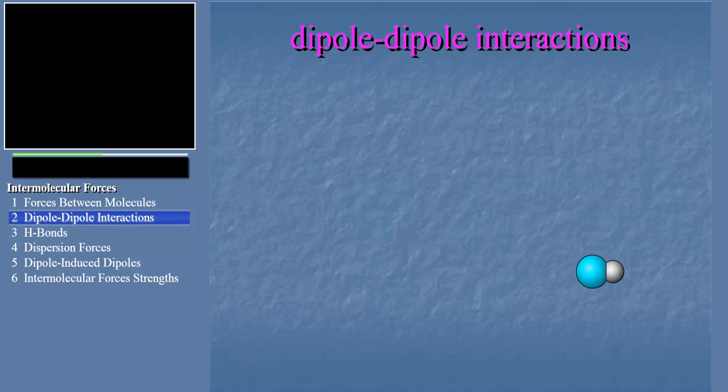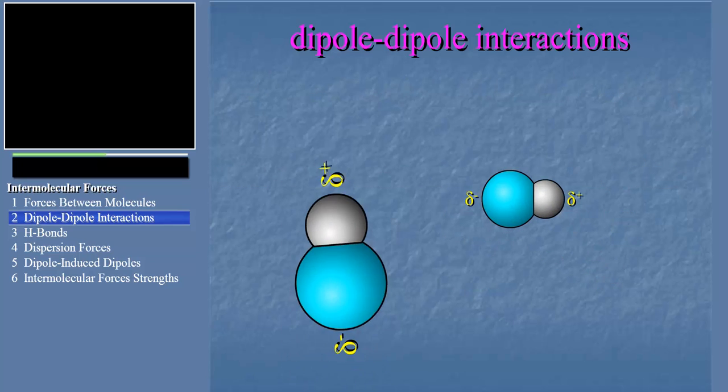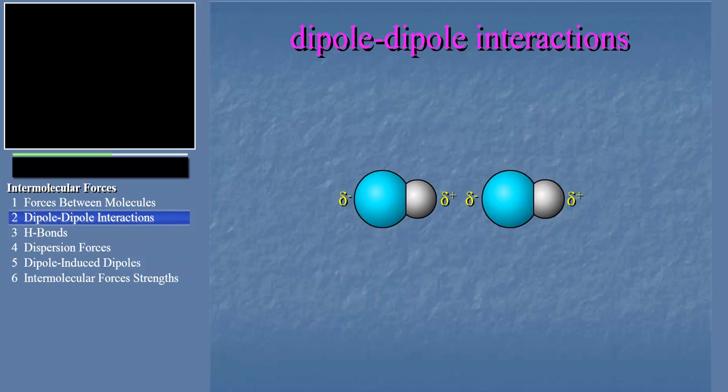Well, imagine what might happen if two HCl molecules approach one another. The positive end of one molecule would attract the negative end of its neighbor, right? We call that attraction a dipole-dipole interaction, for obvious reasons.